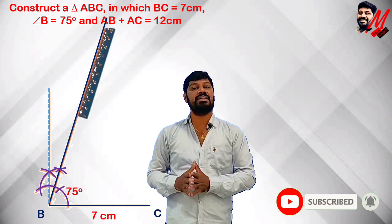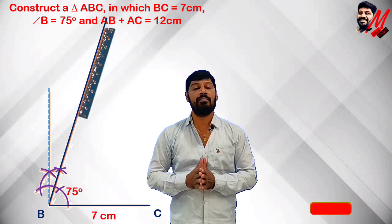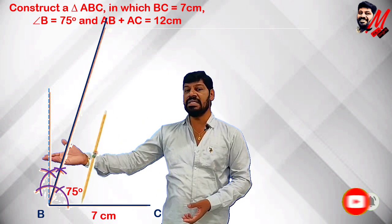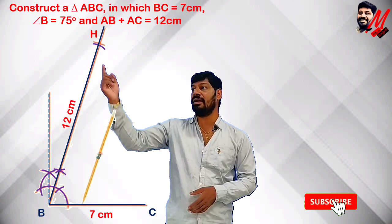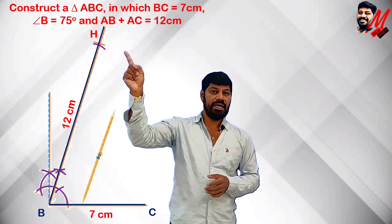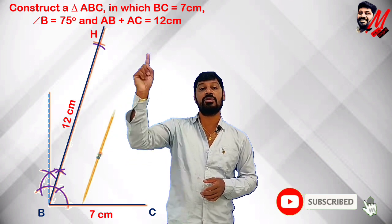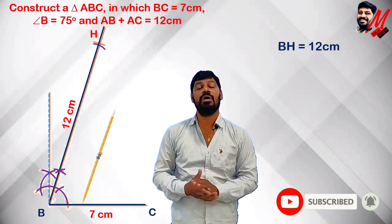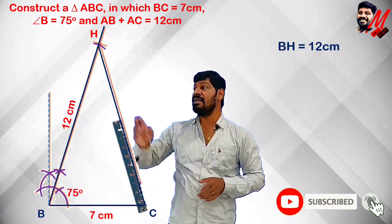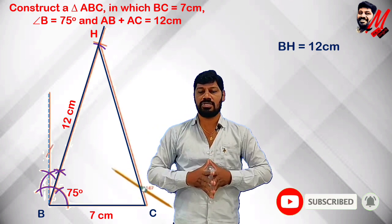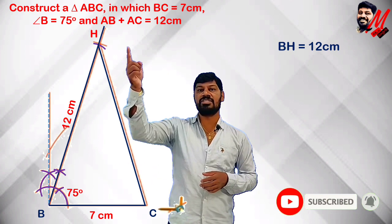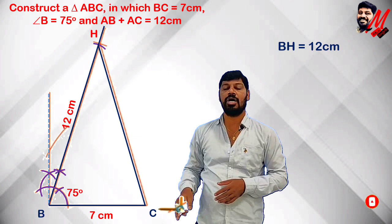We extend the ray from B along the 75-degree angle. The measurement AB plus AC is 12 cm, so we set the compass radius to 12 cm. On the extended ray from B, we mark a point H such that BH equals 12 cm. Now we have BH equal to 12 cm.